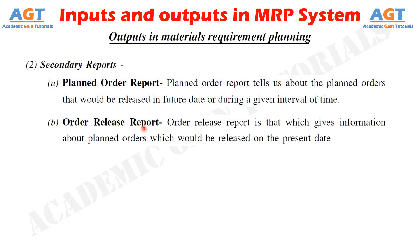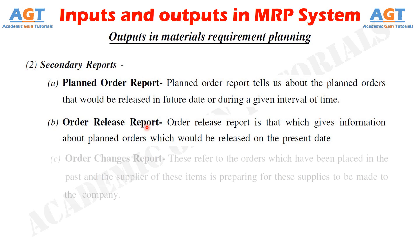Category B is the Order Release Report, which gives information about planned orders to be released on the present date. It helps purchase managers to release purchase orders to suppliers and to keep track of purchase orders that have to be sent on a particular day. The MRP logic makes use of the lead time of items in determining the release date of orders so that goods are supplied by the time items are required for production.